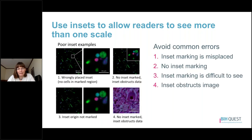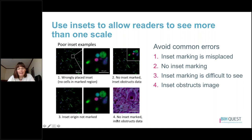Here are some examples of things to avoid. In the first case, we have a wrongly placed inset where the inset box is a region with no cells, yet we see cells and structures in the actual inset — the alignment doesn't correspond to where the image was taken from. In the second case, there is no inset marked and the inset is obstructing part of the data. In the third case, the origin of the inset isn't marked though it's moved off to the side. In the last case, there is again no inset marked and the inset obstructs large parts of the image.